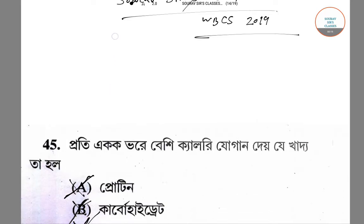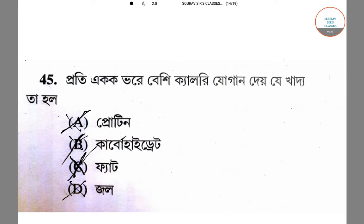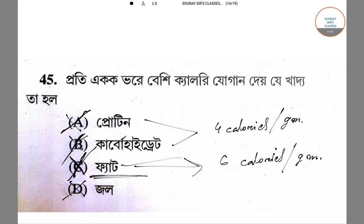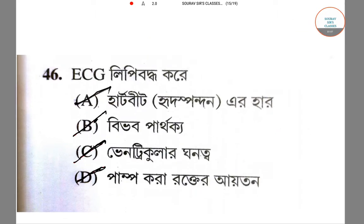The first question asks which food gives more calories per unit mass of food. The right answer is fat, because protein and carbohydrates both give four calories per gram, whereas fat gives nine calories per gram. So for this question, the right answer is fat.